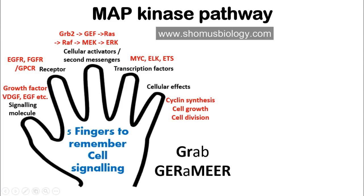The mnemonic to remember the cellular activators is 'Grab Jeremy' — imagine Jeremy is a fugitive and you need to grab him. 'Grab': GR stands for GRB2. Then 'Jeremy': J-E stands for GEF, R-A stands for RAS, R also stands for RAF, A-M-Y stands for MEK, and E-R stands for ERK. So 'Grab Jeremy' means GRB2 → GEF → RAS → RAF → MEK → ERK — that's how you recall the signaling cascade of the MAP kinase pathway.